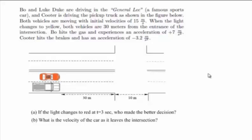Both vehicles are moving with initial velocities of 15 meters per second. When the light changes to yellow, both vehicles are 30 meters from the entrance of the intersection. Bo hits the gas and experiences an acceleration of positive 7 meters per second squared. Cooter hits the brakes and has an acceleration of negative 3.2 meters per second squared.